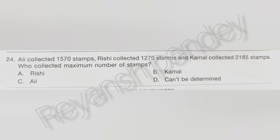Ali collected 1570 stamps. Rishi collected 1270 stamps. And Kamal collected 2185 stamps. Who collected the maximum number of stamps? The answer is B — Kamal.